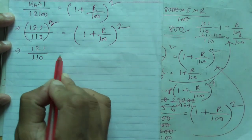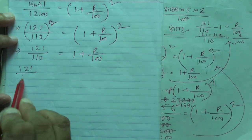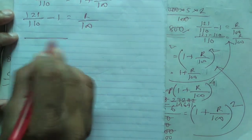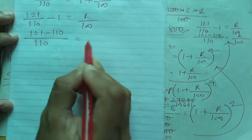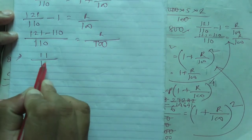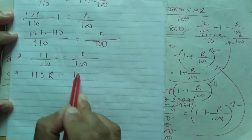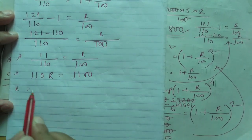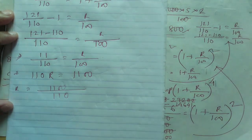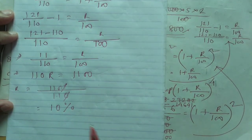After cancelling the squares, 121 by 110 equals 1 plus R by 100. Rearranging: 121 by 110 minus 1 equals R by 100. LCM is 110, so (121 minus 110) by 110 equals R by 100, giving 11 by 110 equals R by 100. Cross multiply: 110R equals 100 into 11, so R equals 1100 by 110. Cancel zeros and divide by 11 to get R equals 10%. The rate is 10%.